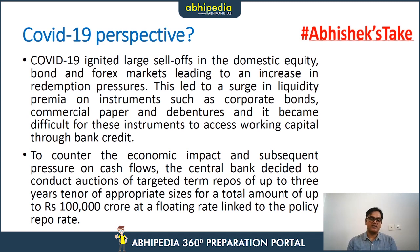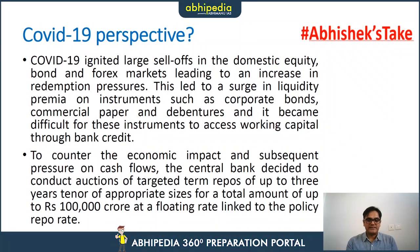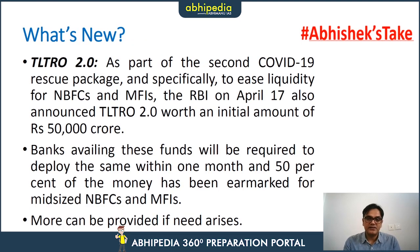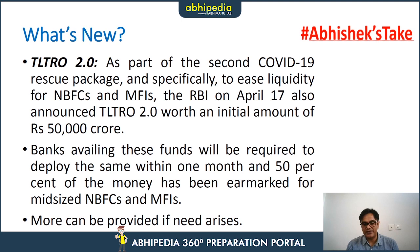RBI pledged around ₹1 lakh crore in the first tranche, focusing on the corporate bond market, commercial paper, and debentures. In the second tranche — TLTRO 2.0 — announced on 17th April, another ₹50,000 crore was pledged, with the focus shifted to NBFCs and microfinance institutions. In India, banks largely cater to large firms and enterprises, while NBFCs and microfinance institutions provide money to small entrepreneurs, small businesses, and the self-employed to help them remain afloat.